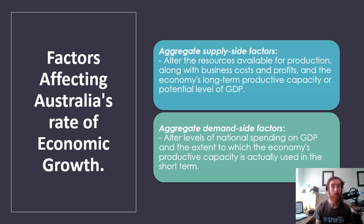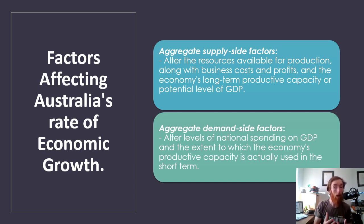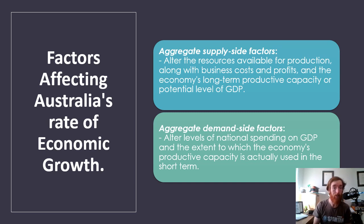One easy example: if income tax is decreased, people have more disposable income and they'll use that to buy more goods and services. They'll probably save a little bit and maybe import some things, but for the most part they're probably going to buy more goods and services. Like a lot of people, when they get a pay rise, the first thing they do is buy something they don't need — which is actually good for the economy.